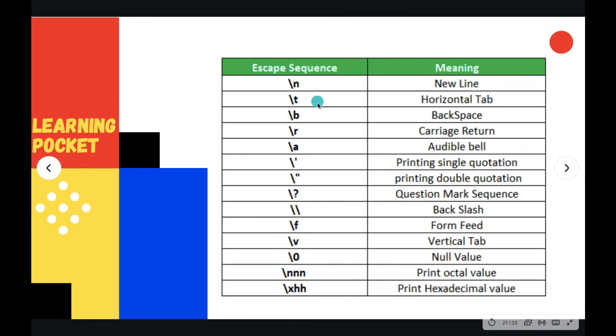Then we have horizontal tab, which is \t, backspace with \b, carriage return, audible bell, and there are a lot more that we will be using. I hope you will understand them more clearly when we create our very first C program.